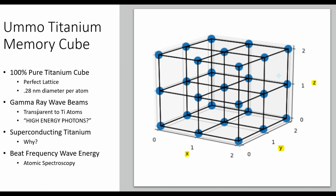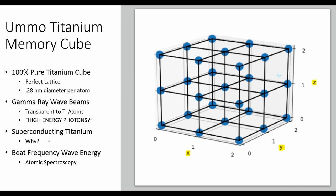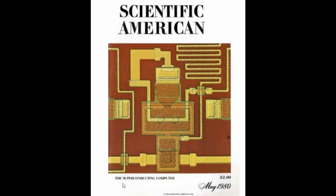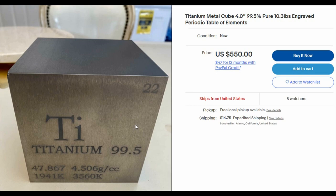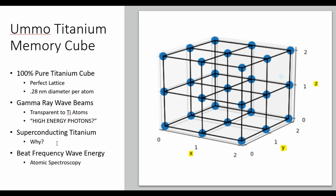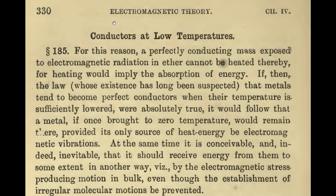Now you have a better understanding of why we would need gamma ray wave beams or gamma ray lasers that are a low-energy technology. So now we move to superconducting titanium, which is kind of weird because we don't think of superconducting materials for data storage. We've thought of superconducting processors like this 1980 article on the Josephson Junction, but using superconducting metals as a means of long-term data storage seems a bit odd. To learn why we would do this, let's go back to 1893, volume one of Oliver Heaviside's Electromagnetic Theory.